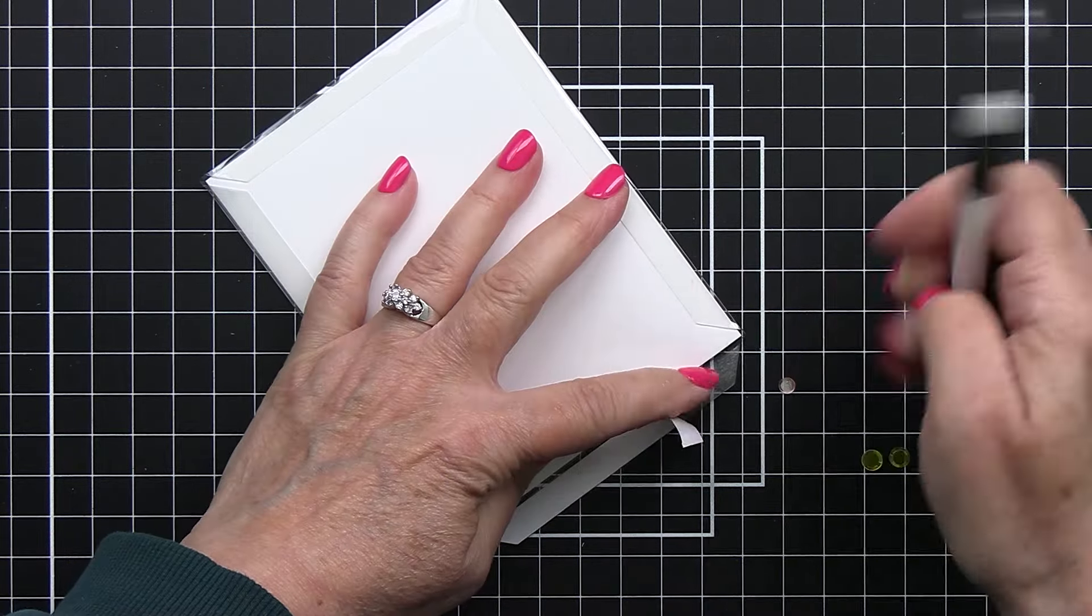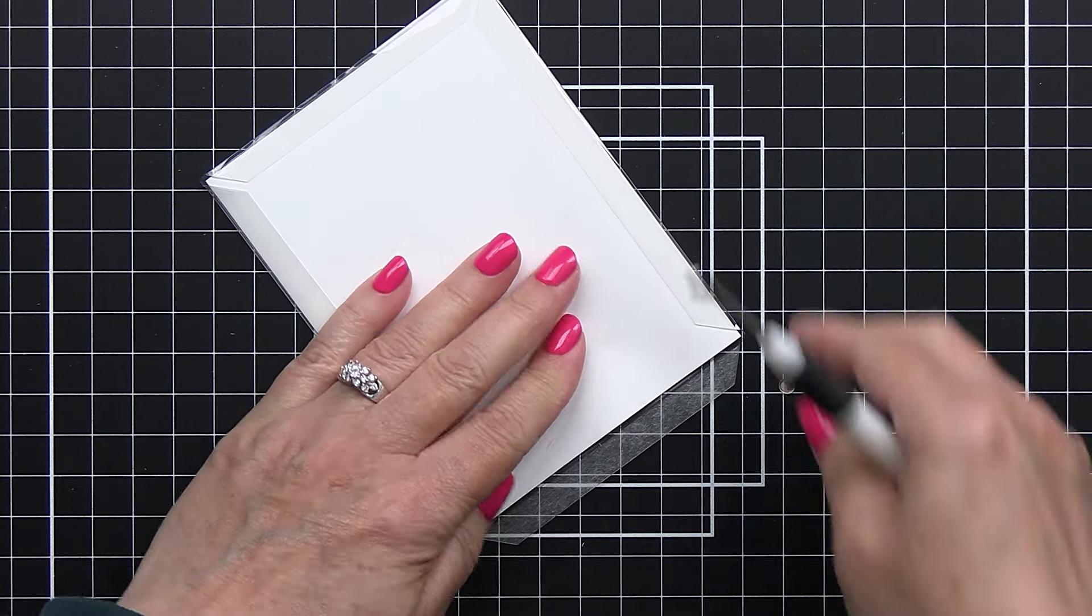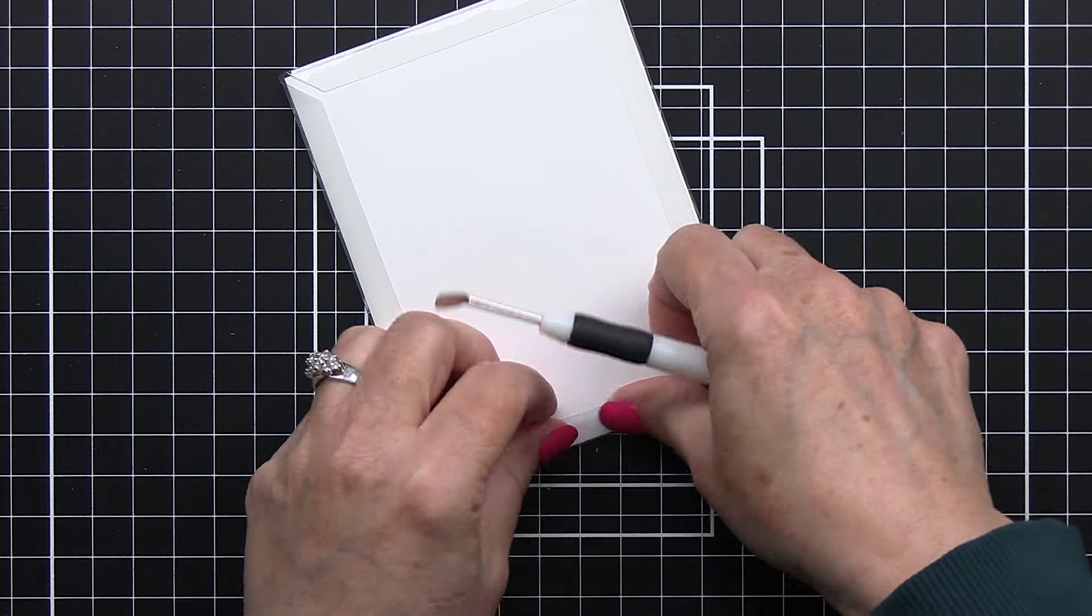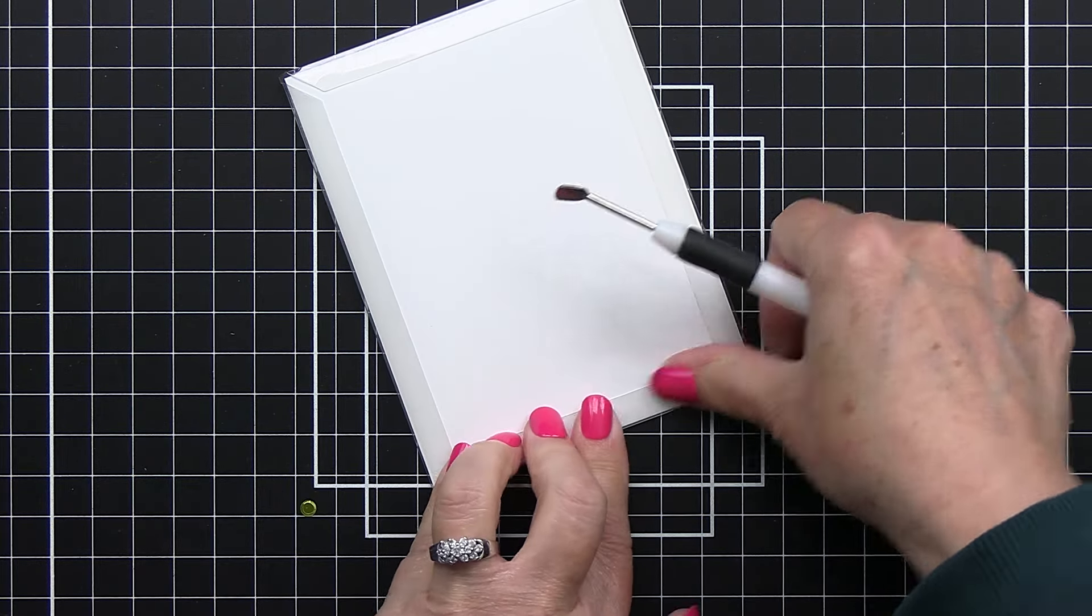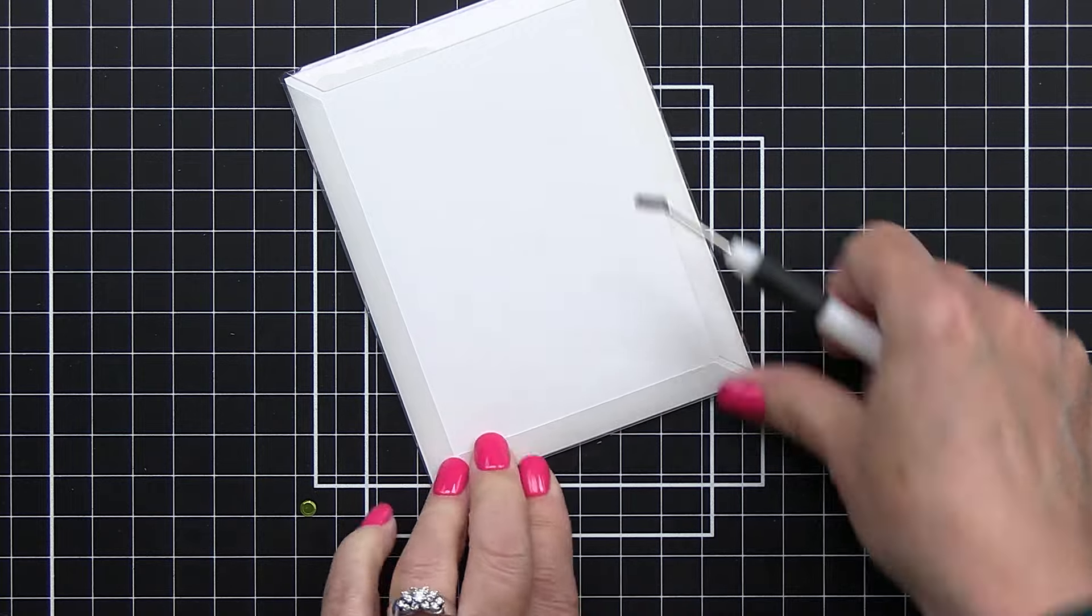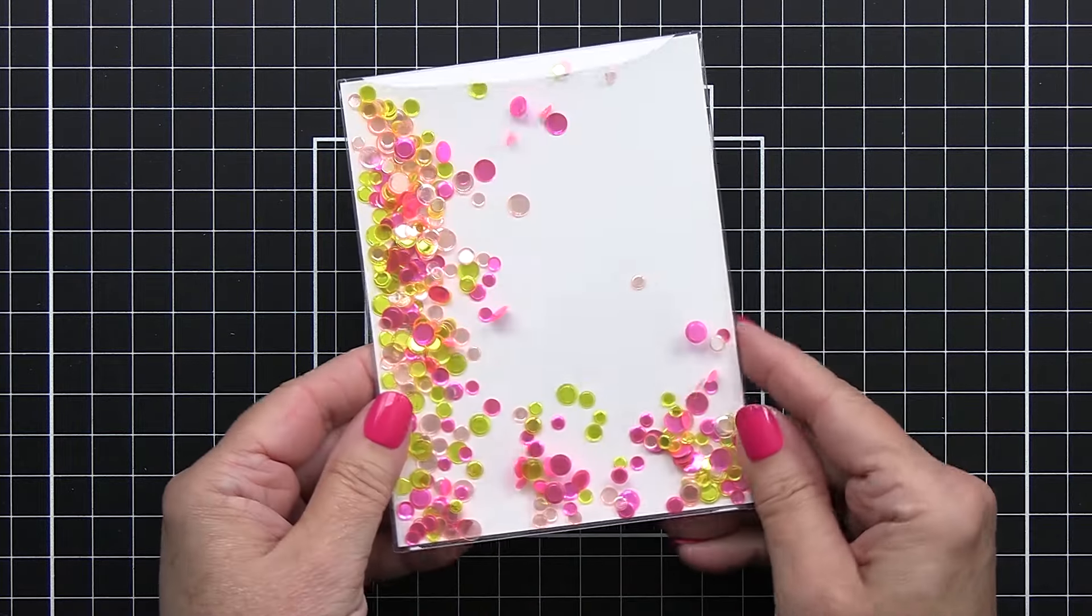I'm just going to dump that liberally into the top of the pocket and then I'll just go ahead and in that same way remove that release paper, fold that over and there we have our finished shaker element for our card.